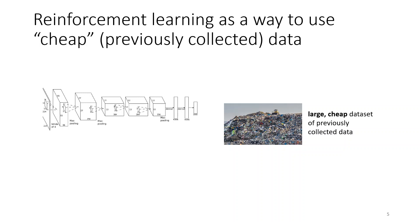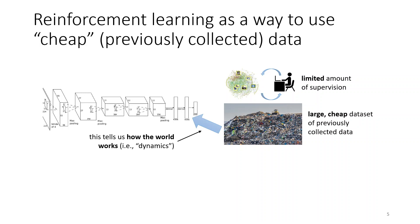Perhaps we can take a large cheap data set — our garbage dump — in combination with a limited amount of supervision that tells our reinforcement learning algorithm what the task is, and then use the cheap readily available data not to learn what to do, not to reproduce the data source, but rather to learn how the world works. Take the data for what it is, use it to understand the possible consequences of different decisions, learn which decisions to take and which ones not to take, and then use the limited supervision to determine what the task is so you can take the right decisions.